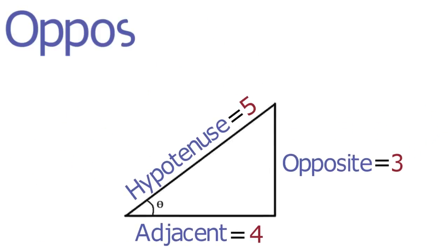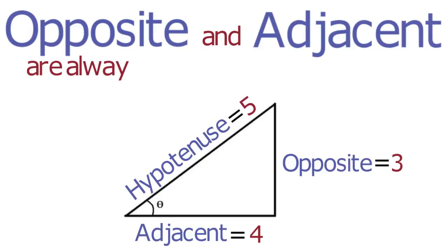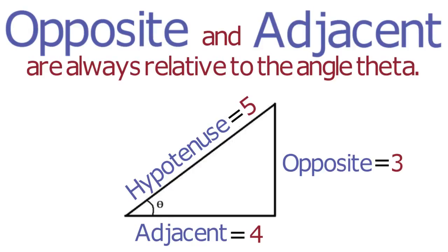Note that both the opposite and adjacent sides of a triangle are always relative to the angle theta. Remember, however, that the hypotenuse of the triangle never changes. It's always the longest side of the triangle.